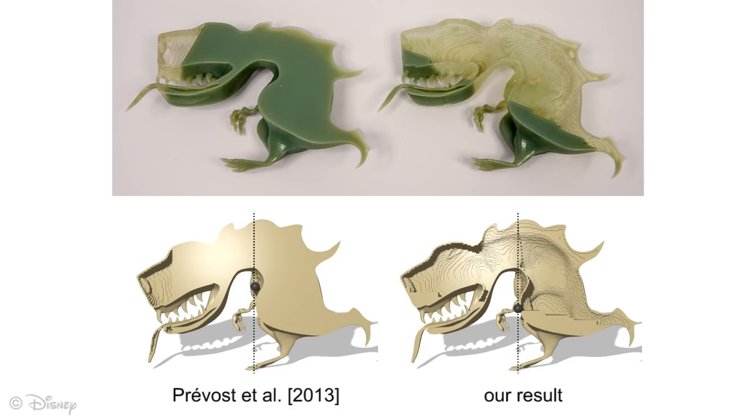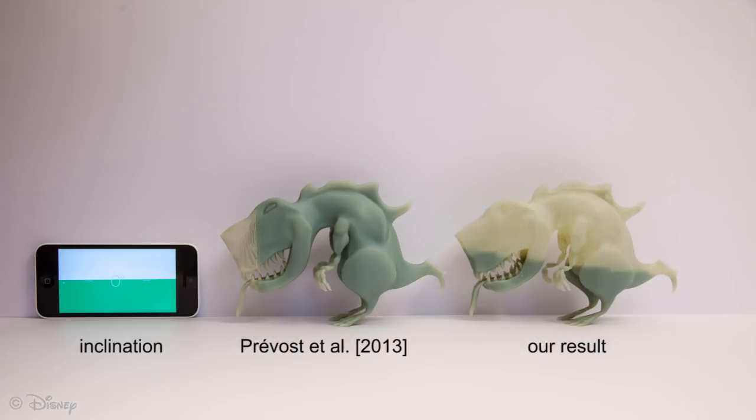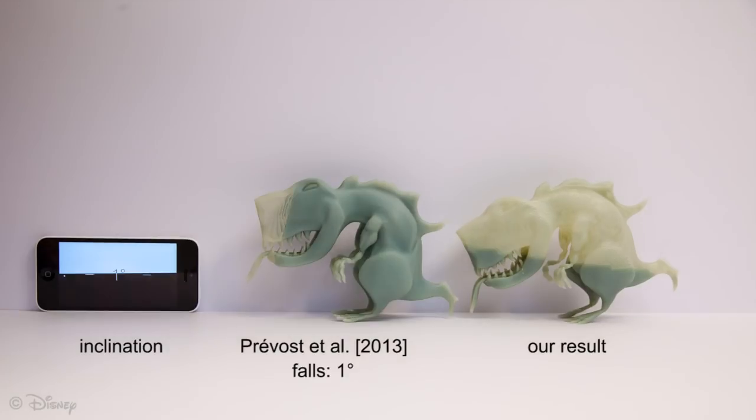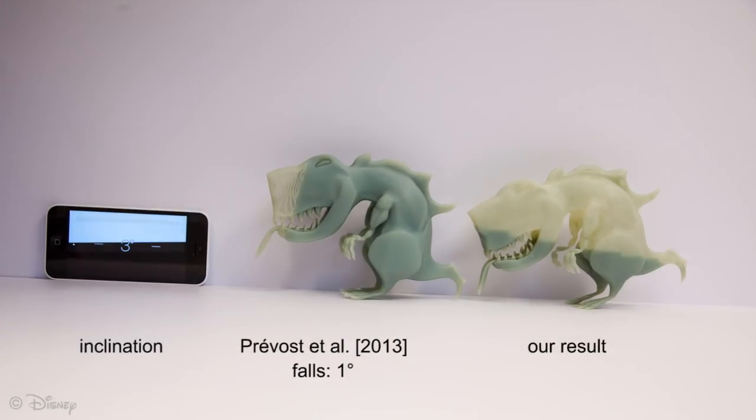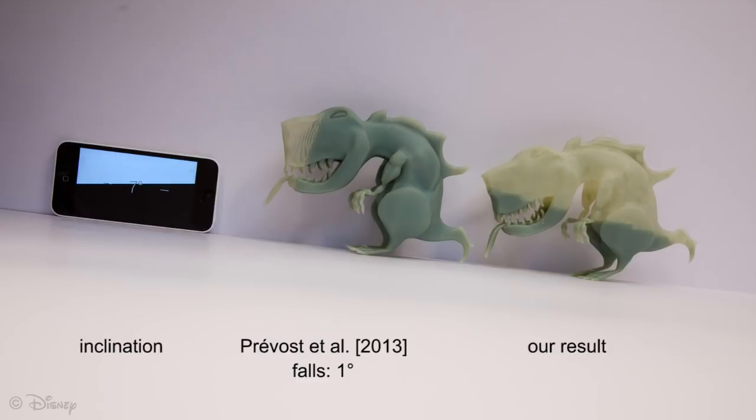Finally, we note that static balancing is an inherent component of our approach. Compared to Prevot et al., our method has the added benefit of lowering the center of mass for increased stability. In this tilting plane test, the T-Rex model from Prevot et al. no longer balances on his feet at a 1 degree inclination, while our model remains standing, showing improved stability.